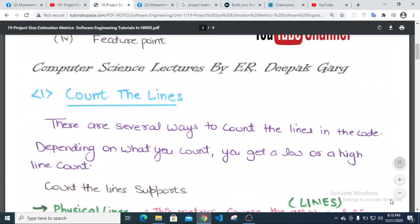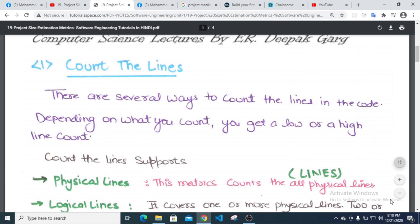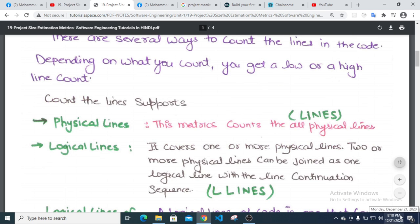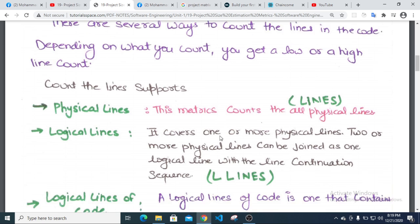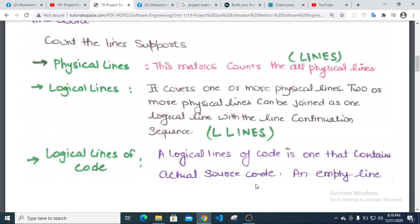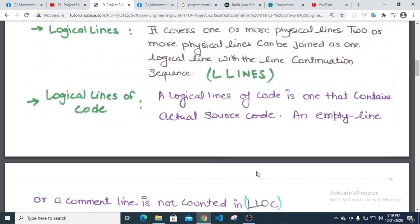When you count the lines, there are several ways to count the lines in the code. Depending on what you count, you get a low or high line count. Count the line supports physical lines and logical lines. Physical lines count all lines, while logical lines exclude comments and headers.